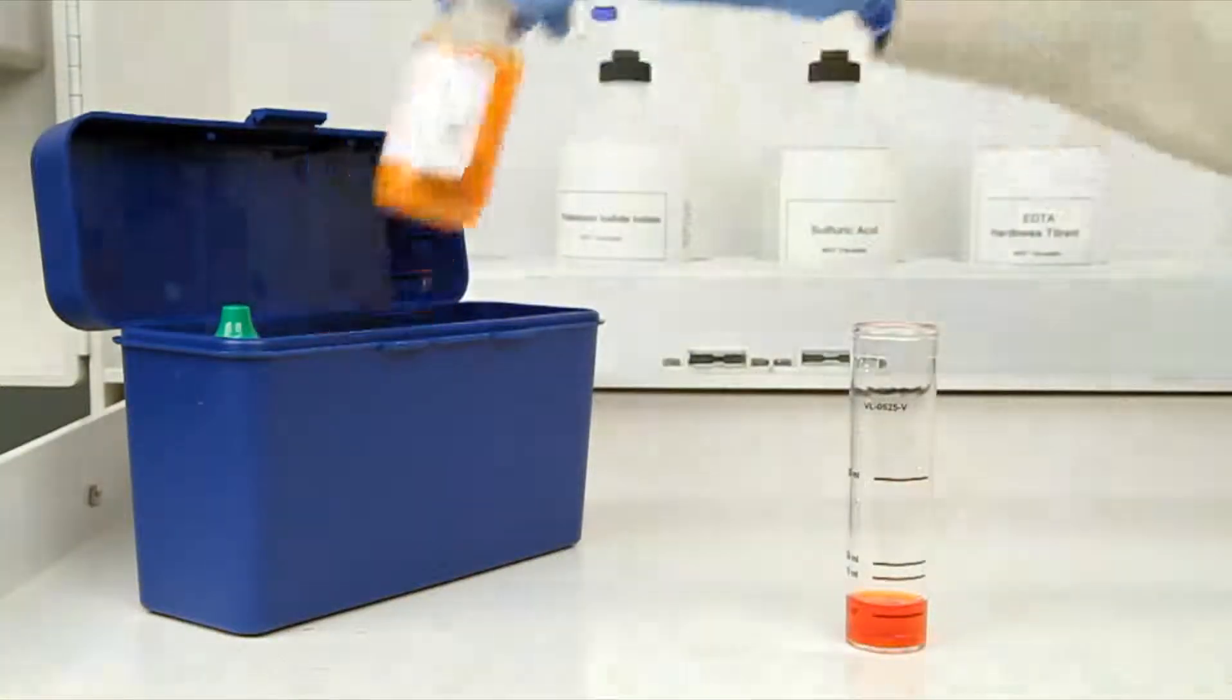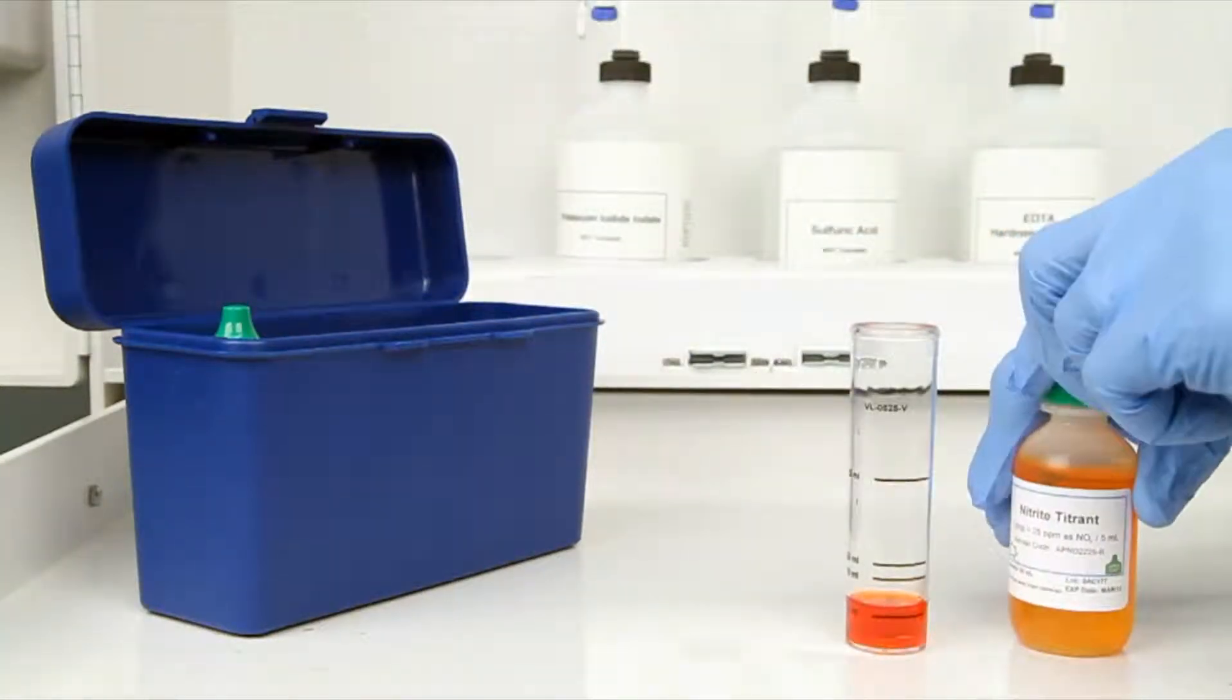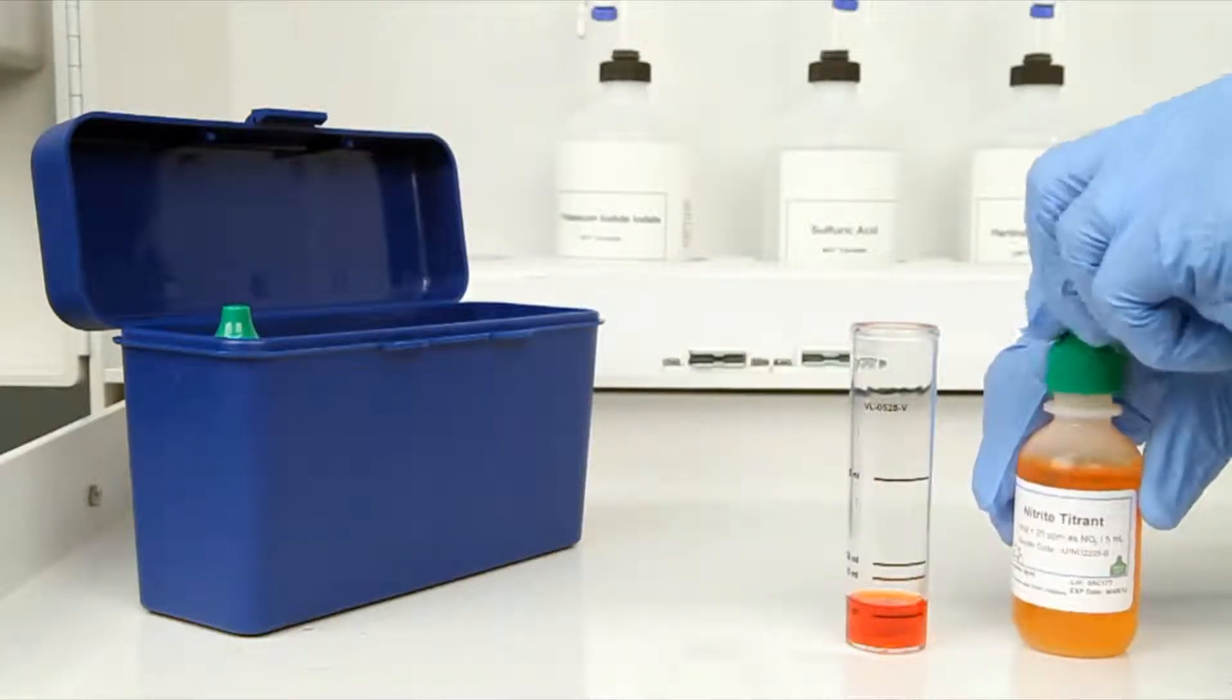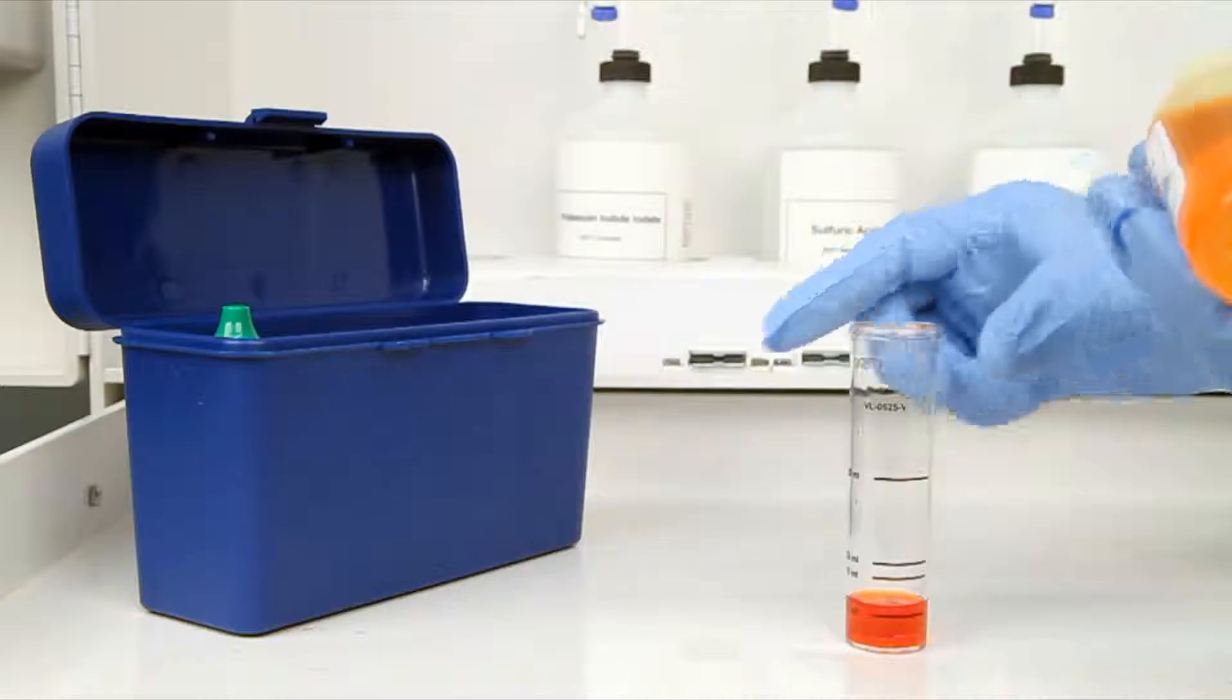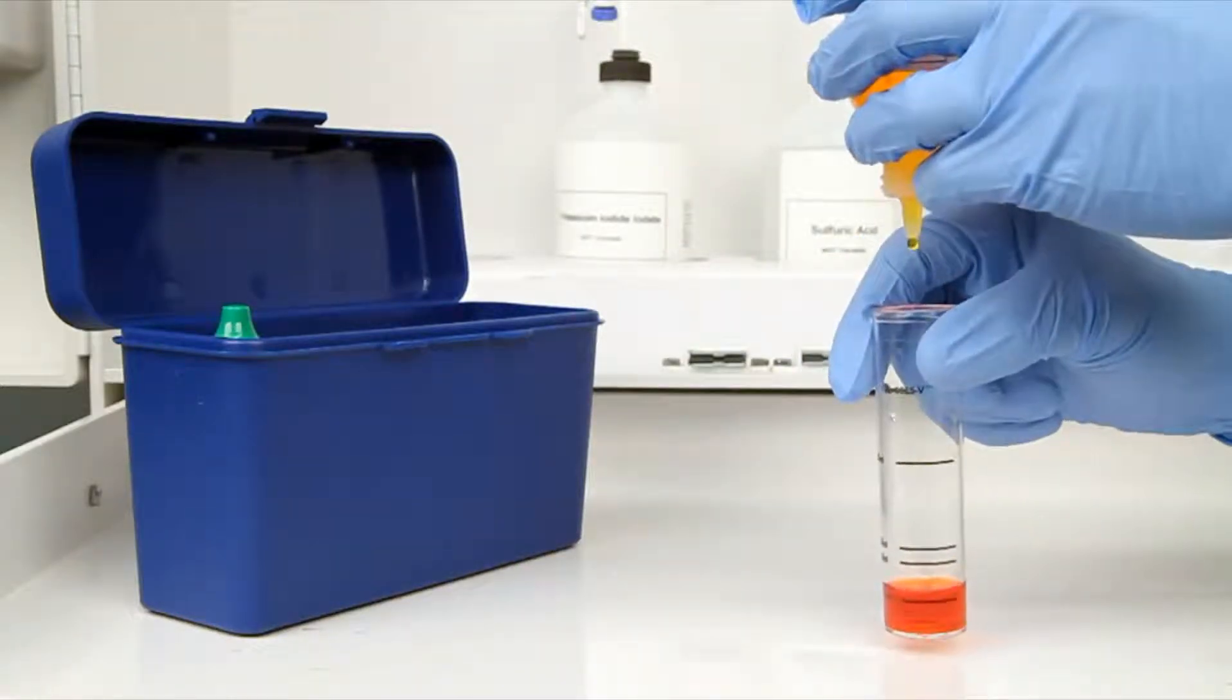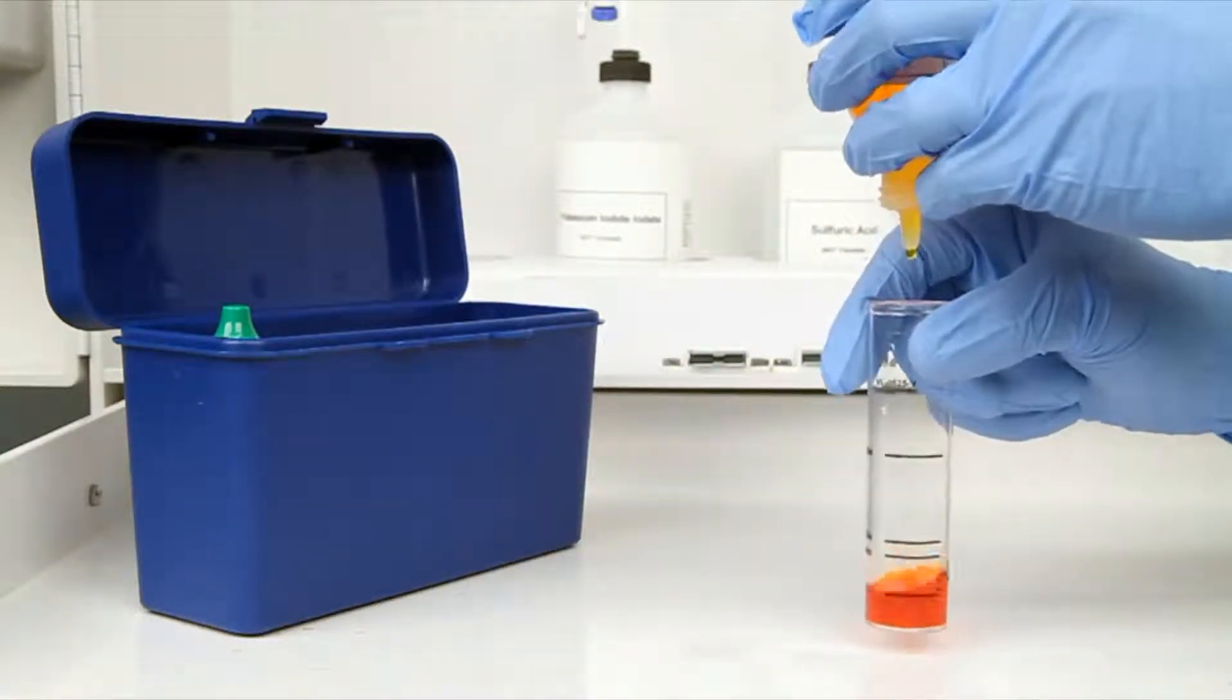The next step according to the endpoint ID procedure is to perform the titration. Each bottle of titrant is labeled with the equivalency and sample size it was manufactured for. It's important to make sure you have the proper titrant and the proper sample size for this titration.